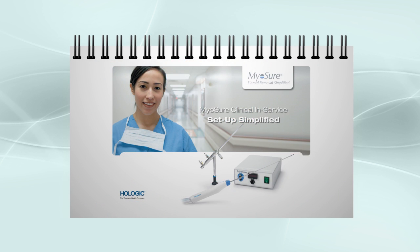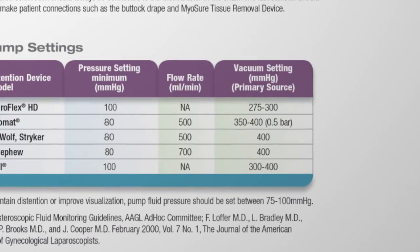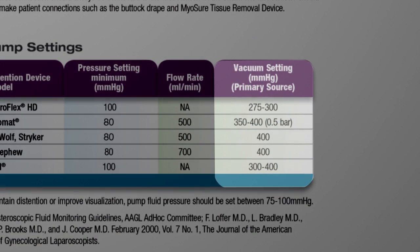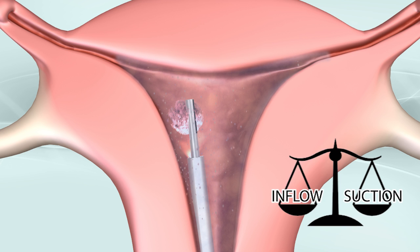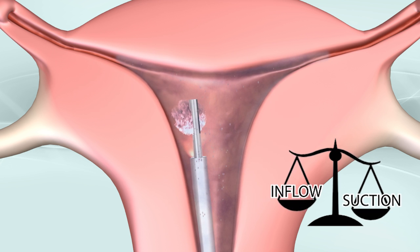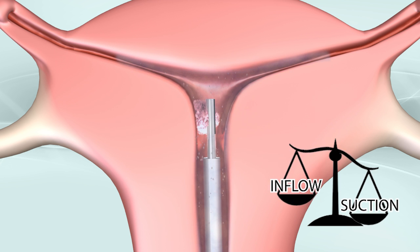It is important to set the vacuum pressure based on the recommendations in the Myosure setup guide. The vacuum pressure significantly affects uterine distention and cutting efficiency. If the vacuum is set too high, distention will deteriorate quickly when Myosure is activated.